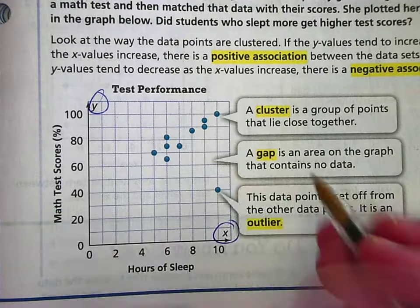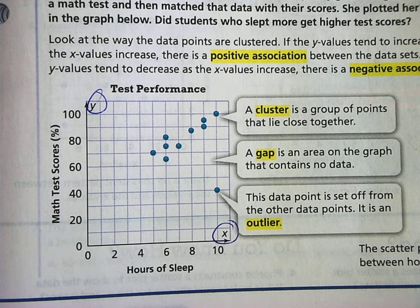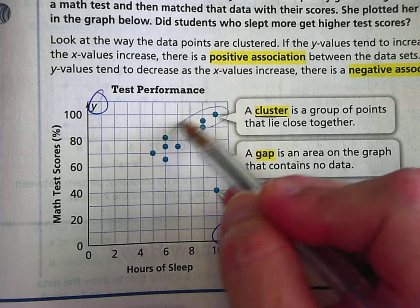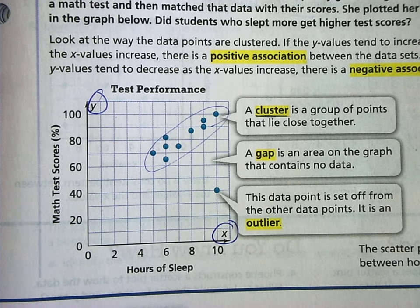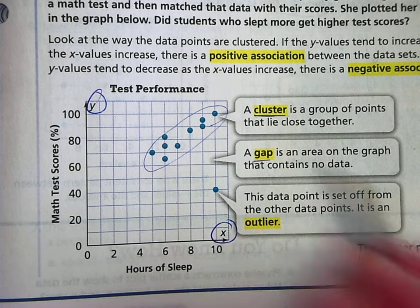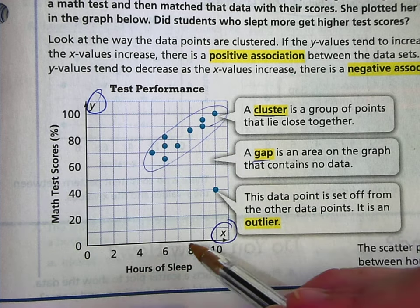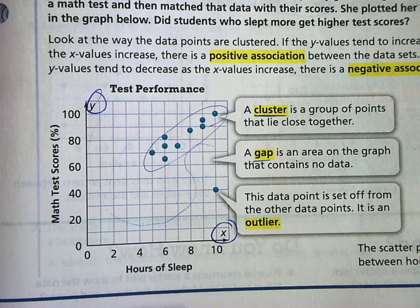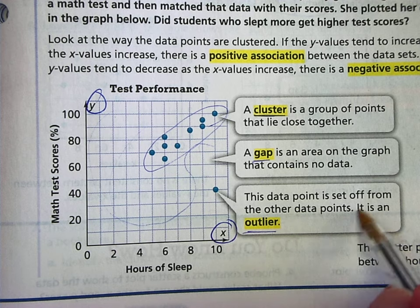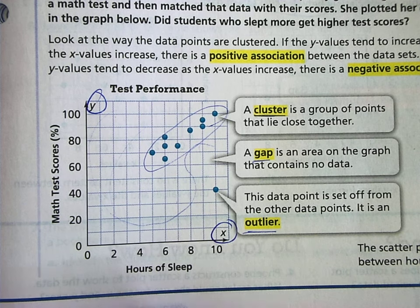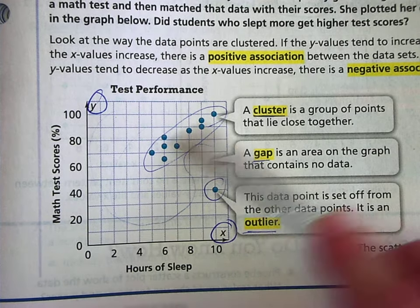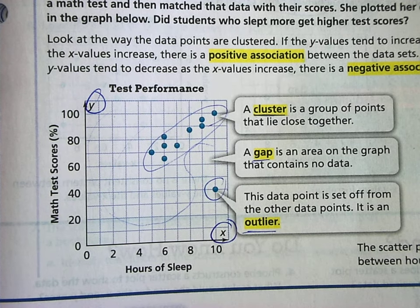Okay, so once you graph your points, you can identify clusters, gaps, and outliers. A cluster is a group of points that lie close together. A gap is where you have areas on the graph that have no data. And then an outlier is a point or points that are not close to the other data. They're set far away.